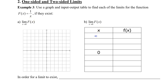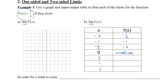Let's first create our table for 1 over x. I'll choose some negative numbers: negative 2, negative 1, and negative one-half, then 0, one-half, 1, and 2. Plugging each x value into the function gives outputs of negative one-half, negative 1, negative 2, undefined at 0, then 2, 1, and one-half. This is what we call a reciprocal function.